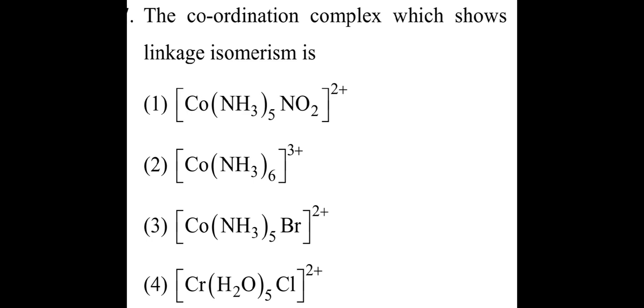The coordination complex which shows linkage isomerism is - you can see here in the first compound there are five ammonias and one NO2, second compound all ammonias, third compound five ammonias and one